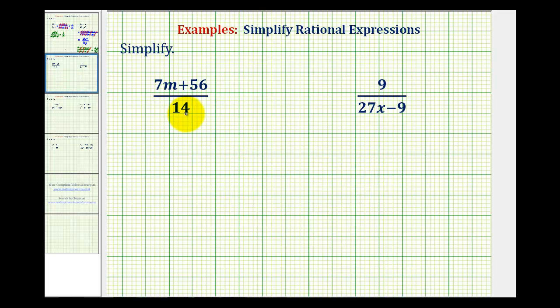So going back to our first example, the first step is to factor the numerator by factoring out the common factor of seven. We can write the numerator as seven times the quantity m plus eight. Notice if we distribute, we still have seven m plus 56. And then we can write 14 as seven times two. And in this form, we can simplify out the common factor of seven. Seven over seven simplifies to one. So this simplifies to m plus eight divided by two.